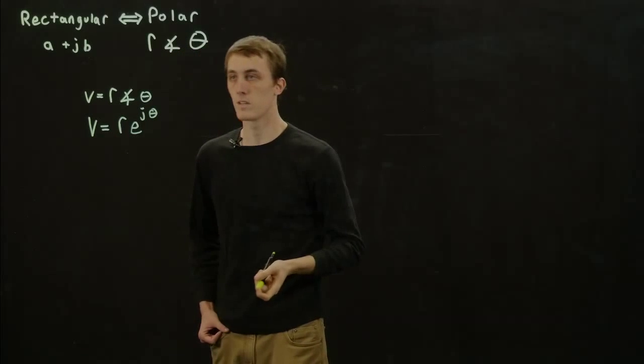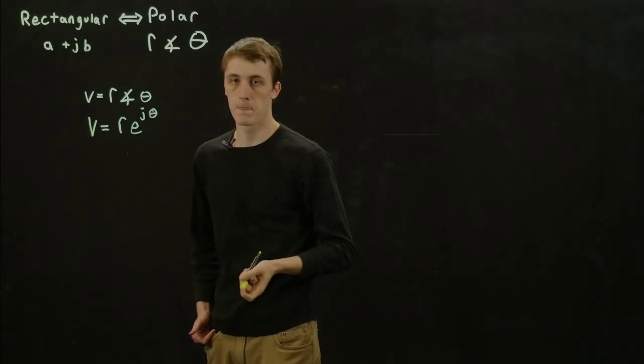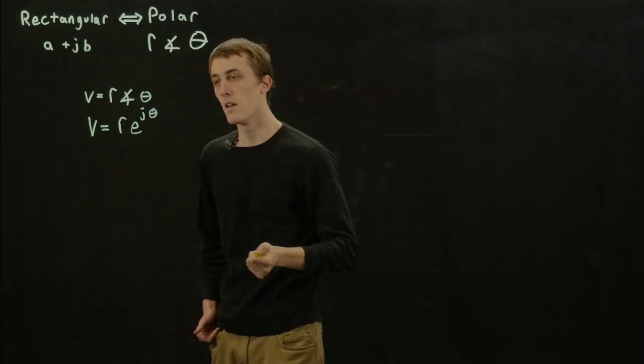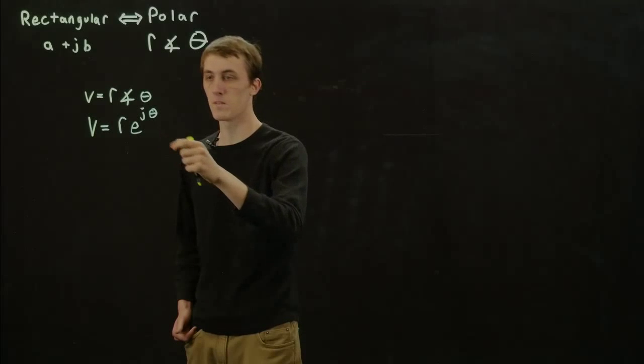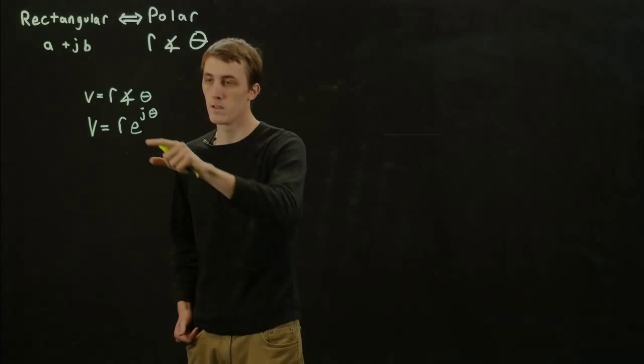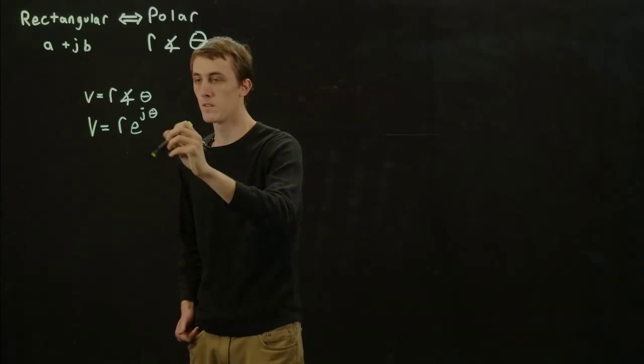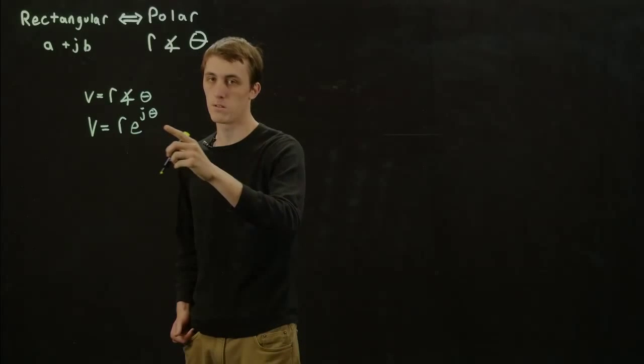We just take this for a fact. We can prove that in a math book but we'll just leave it the way it is, and this is also in polar form. We can use Euler's identity if you remember from calculus where E to the J theta is equal to cosine theta plus J sine theta.